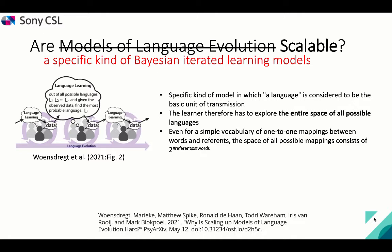In this kind of model, which is illustrated on the left and is very well known in the community, you have typically an adult tutor that produces language and then a child learner who observes and has to try and learn the language. There is a turnover of the generations — the child becomes the adult and then a new child joins the population, giving us an iteration of language transmission. In this particular model, the language is always transmitted as if it were a unit, as if it's the basic unit of transmission. This has as a consequence that the learner has to explore the entire space of all possible languages.